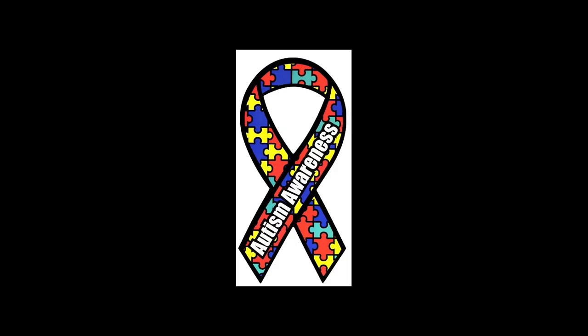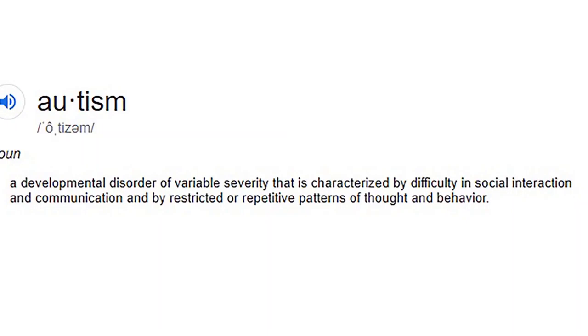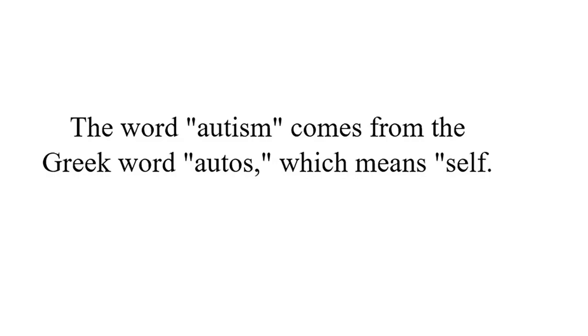Autism. What is autism? The dictionary categorizes it as a developmental disorder of variable severity that is characterized by difficulty in social interaction, in communication, and by restricted or repetitive patterns of thought and behavior. In layman's terms, autism comes from the Greek word 'autos,' meaning self — therefore, they're self-absorbed.